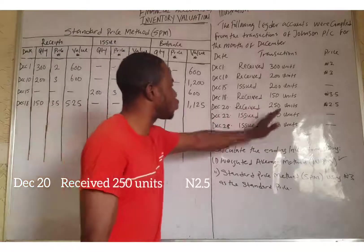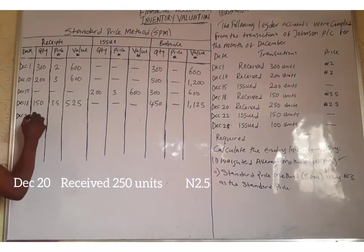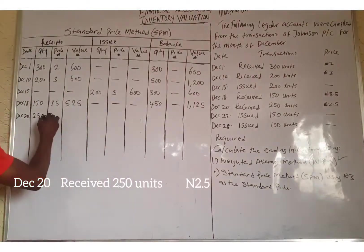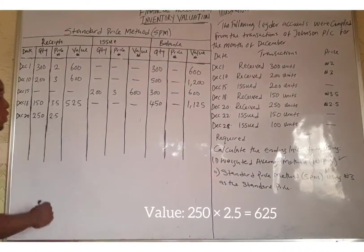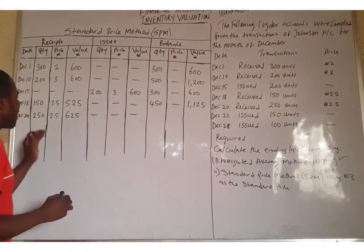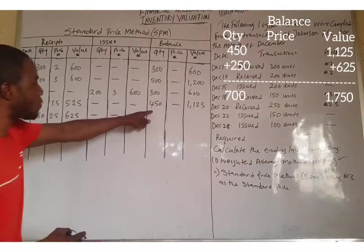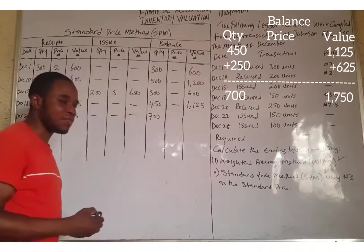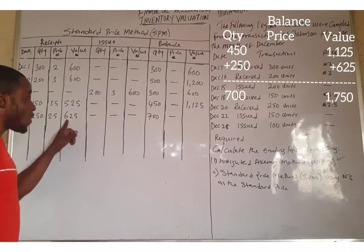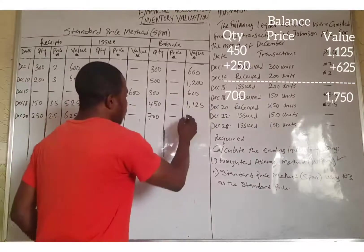On December 20, they received an additional 250 units at a price of ₦2.50. 250 multiplied by 2.5 equals ₦625. There is no issue on that day. The balance of inventory in both quantity and value increases: 250 plus 450 equals 700 units, and ₦625 plus ₦1,125 equals ₦1,750.